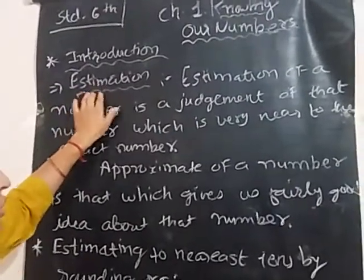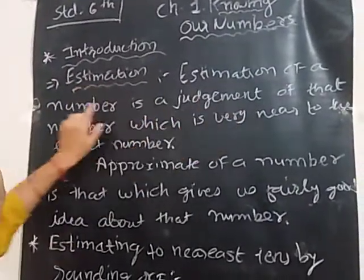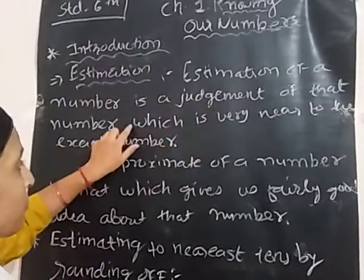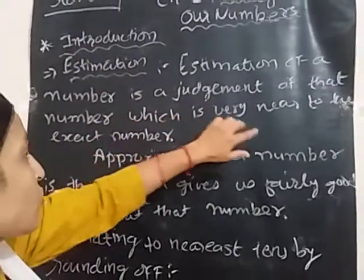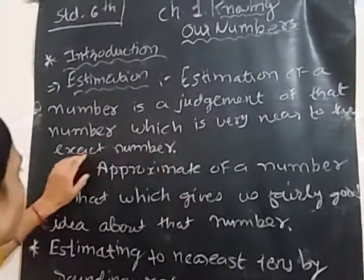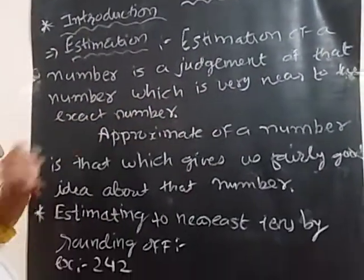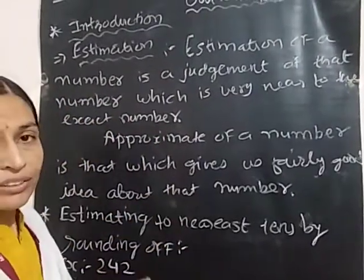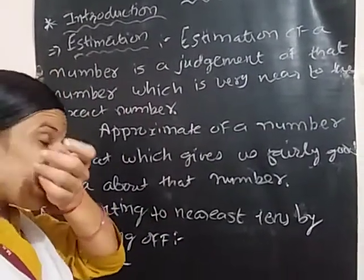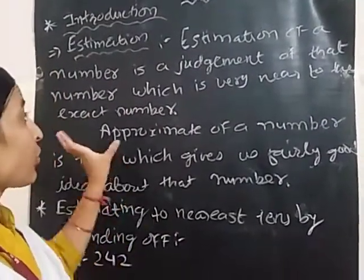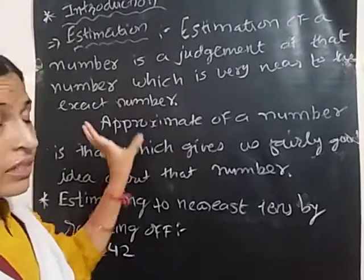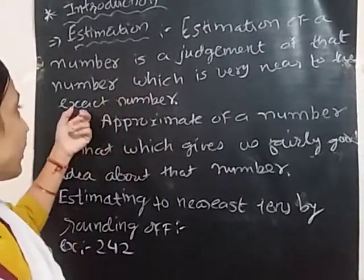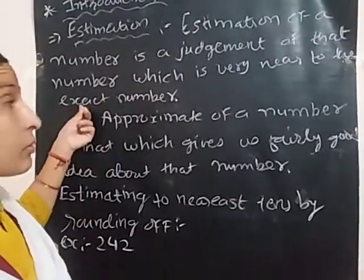Estimation means: estimation of a number is a judgment of that number which is very near to the exact number. This means that it is close to the exact answer. We call it estimation.